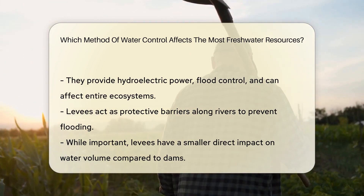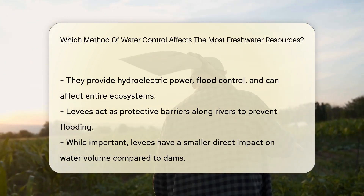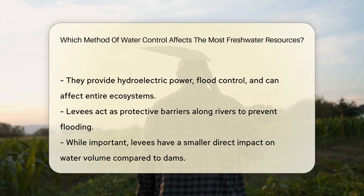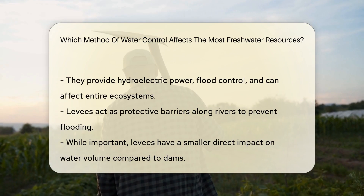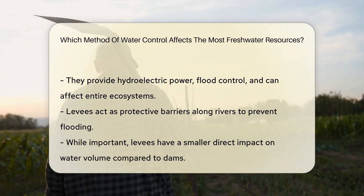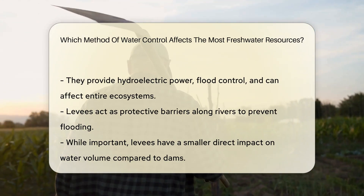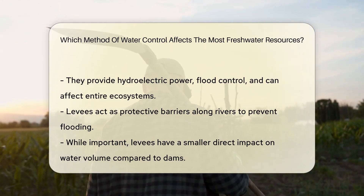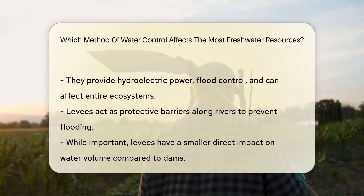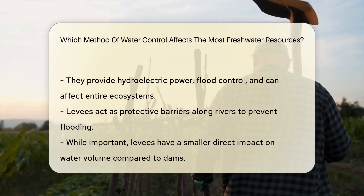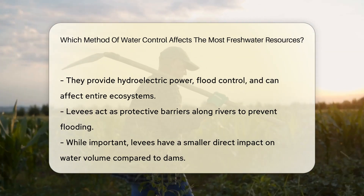Levees, on the other hand, are like the guardians by the riverbanks. Built to prevent floods, they keep rivers in check during heavy rains. Although crucial, their direct influence on water volume is less than dams.